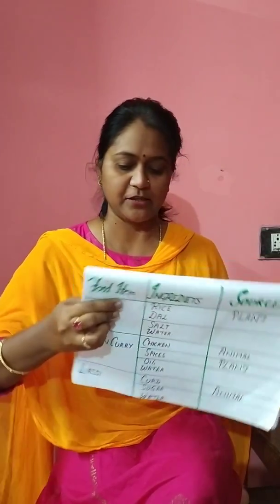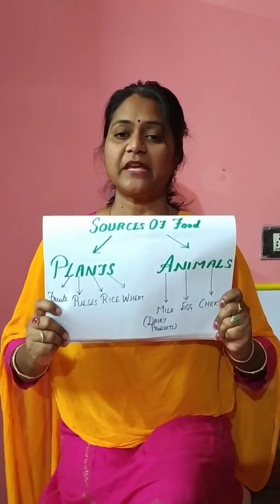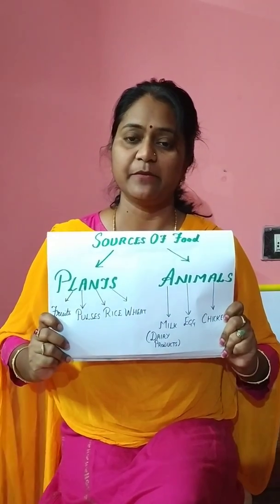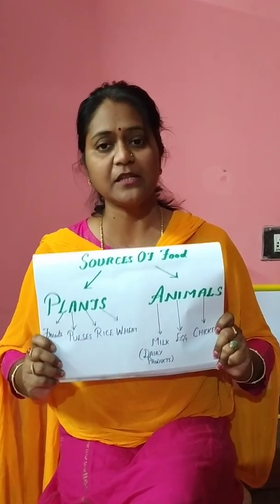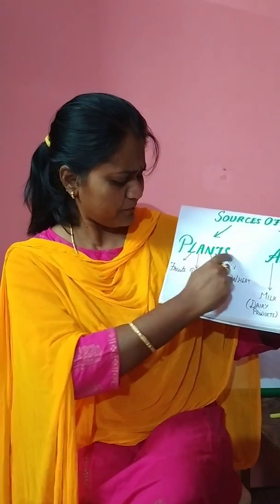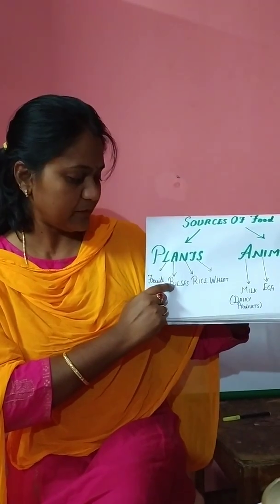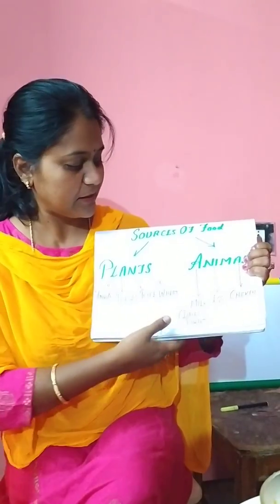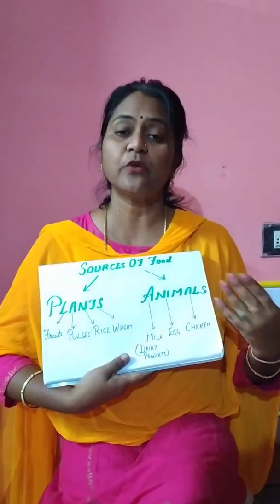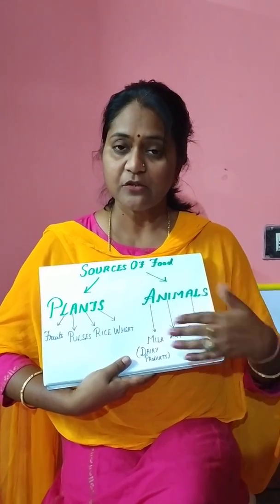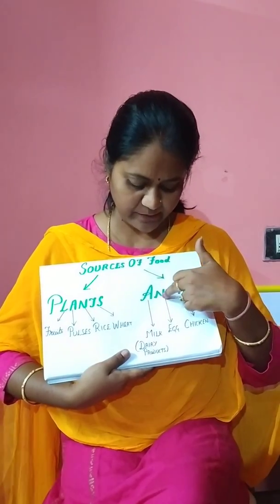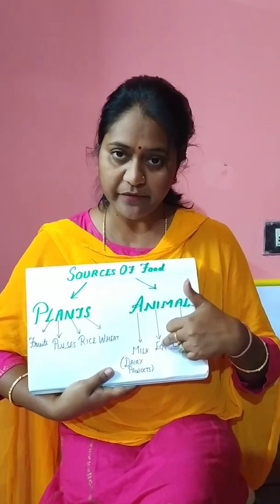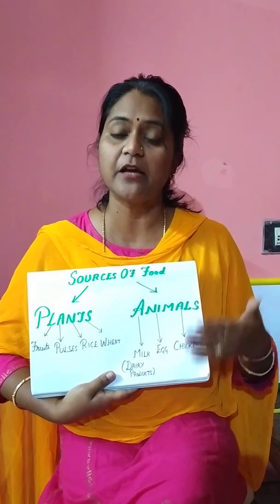So now what we can conclude is that there are mainly two sources of food — plants and animals. Whatever food we are eating, it is either from plants or from animals. From plants we get fruits, pulses, rice, wheat, and spices. From animals we get many things like milk and all other dairy products. From milk you can make butter, curd, and cheese. We also get eggs and meat like chicken and mutton — the sources are animals.